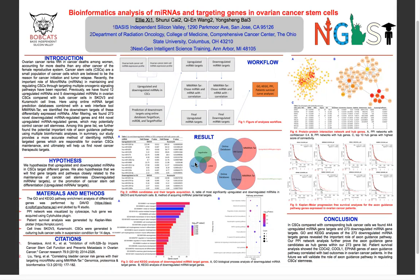As a small introduction, cancer stem cells, or CSCs, are a small population of cancer cells that are a reason for cancer initiation and tumor relapse. MicroRNAs are small non-coding RNA molecules that bind to the 3' UTR region of mRNAs. It is also believed from recent studies that they have a role in regulating cancer stem cells through oncogenic signaling pathways. Our main goal in this research project is to find new gene targets and also pathways related to cancer cell stemness.